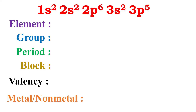In each atom of this element there are 17 electrons, and the number of electrons present in one atom of an element represents its atomic number. So its atomic number is 17.